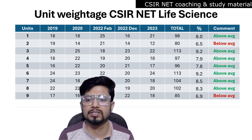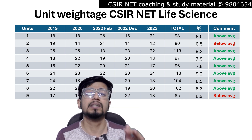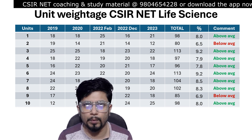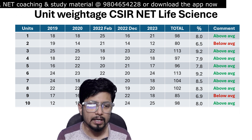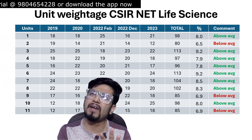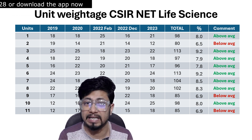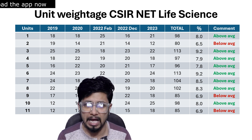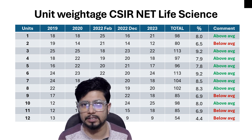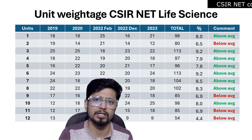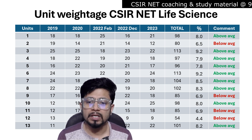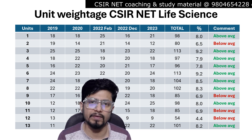Unit 9, classification biology, scores 6.9% — below average. Unit 10, ecology and environmental biology, scores 8% — above average. Unit 11, evolutionary biology, scores 6.9% — below average, since the average is 7.7%. Unit 12, applied biology, scores 4.4% — much lower than average, so below average. Unit 13, biological techniques, scores 8.2% — above average.